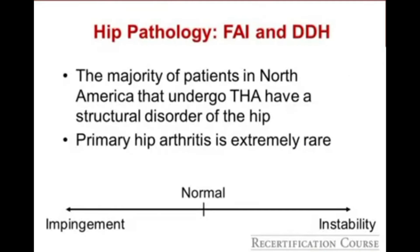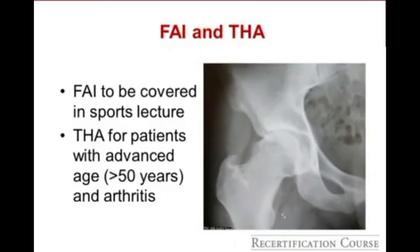The major categories of young adult hip pathology are femoral acetabular impingement and dysplasia. These are two ends of the spectrum — the FAI hip is over-constrained and impinges, while the dysplastic hip is unstable. FAI treatment options are covered in the sports lecture. For total hip arthroplasty, it is an option for patients with advanced FAI and associated arthritis. For patients 50 years or above, total hip arthroplasty should be the treatment of choice.